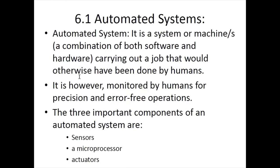We have subsection 6.1: Automated Systems. An automated system is a system or machine — it can be a combination of both hardware and software — which carries out a job that would otherwise have been done by humans. Any system built to replace human activity or automate a manually done process is known as an automated system.